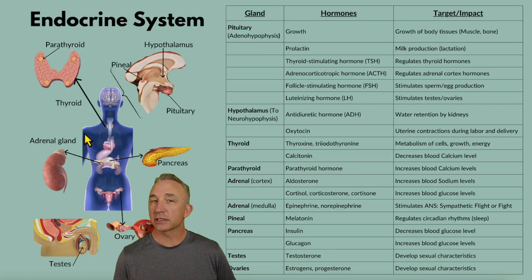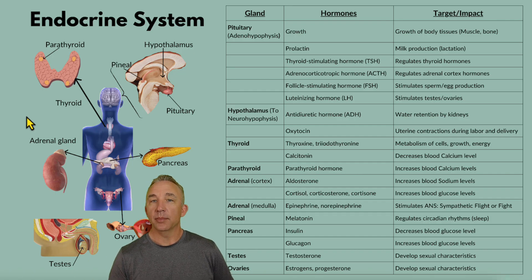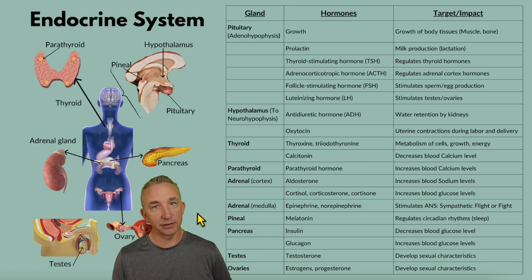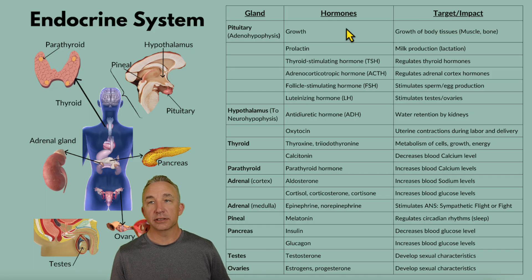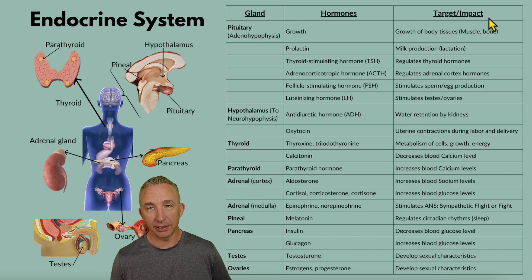Some secondary glands are also worth noting — hormones can be produced by the heart, the thymus gland, and the kidneys — but those are not included here. This overview focuses on the majority of glands taught from an anatomical perspective at a beginning level, including the hormones they produce and their impact, target, or effect in the body.